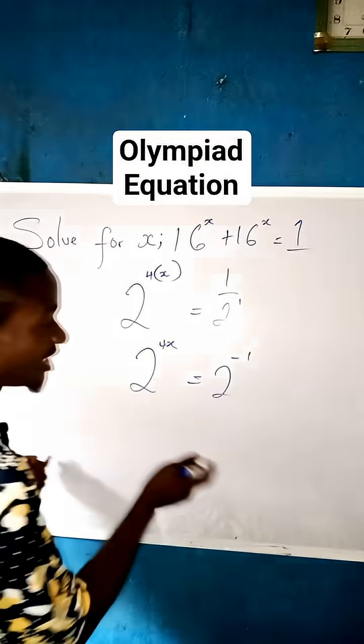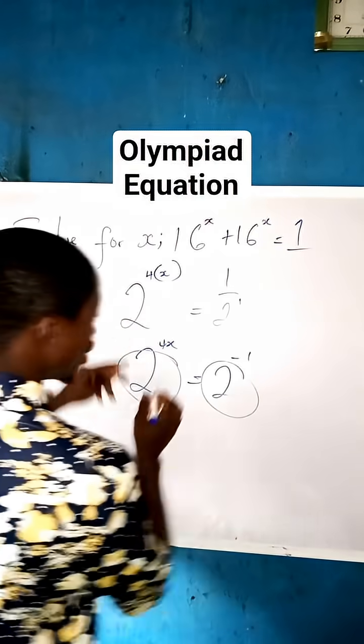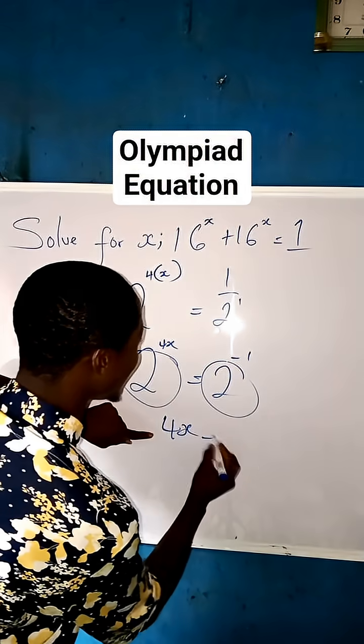So we can now have the same base. You are finished. You see, as you're having the same base, you're finished. So we just have to equate the power. Since the bases are equal, it means the powers also equal. So we are now left with 4x = -1.